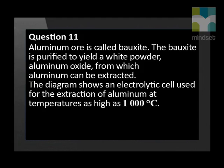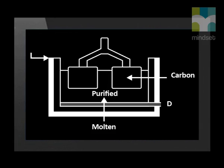Aluminium is one of the most abundant metals on Earth, yet it is expensive largely because of the amount of electricity needed to extract it. We will look at the extraction of aluminium. Aluminium ore is called bauxite. The bauxite is purified to yield a white powder — aluminium oxide — from which aluminium can be extracted. The diagram shows an electrolytic cell used for the extraction of aluminium at temperatures as high as 1,000 degrees Celsius.